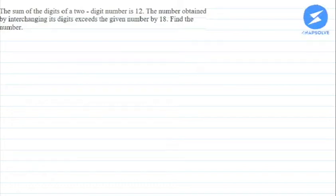Hello everyone, I am your teacher for this question. This question says: the sum of the digits of a two-digit number is 12. The number obtained by interchanging its digits exceeds the given number by 18. Find the number.